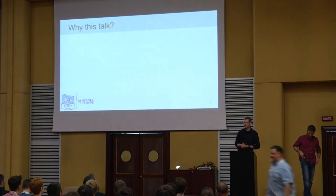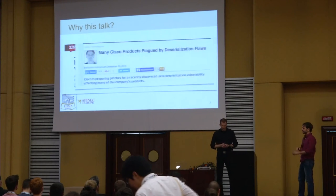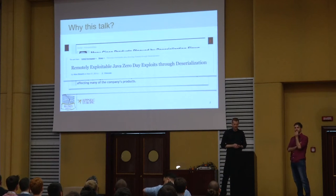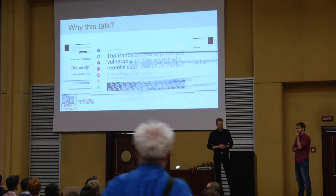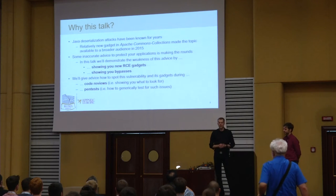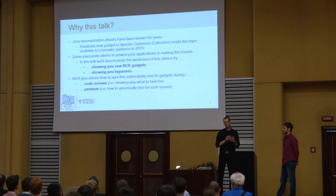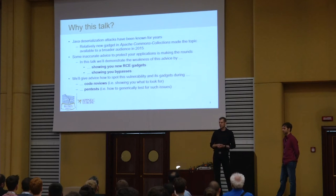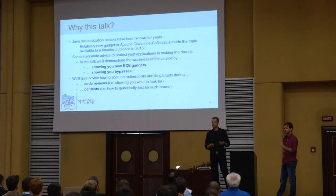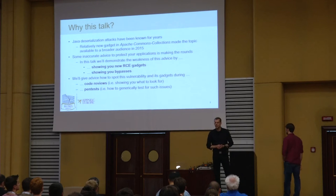Welcome to our talk. There were some major news scoring the headlines last year about Java deserialization vulnerabilities affecting many products, open source and commercial, being remotely exploitable, leading to remote code execution, affecting thousands of potential installations and even some vendors. In this talk we are about to discuss the differences between these mitigation advices, whether they work or not, whether they can be bypassed, and we will show some bypass techniques and tips to spot these vulnerabilities in static code reviews and also during pen tests.